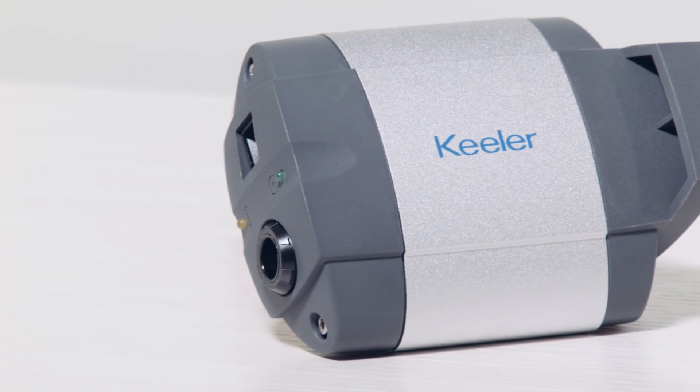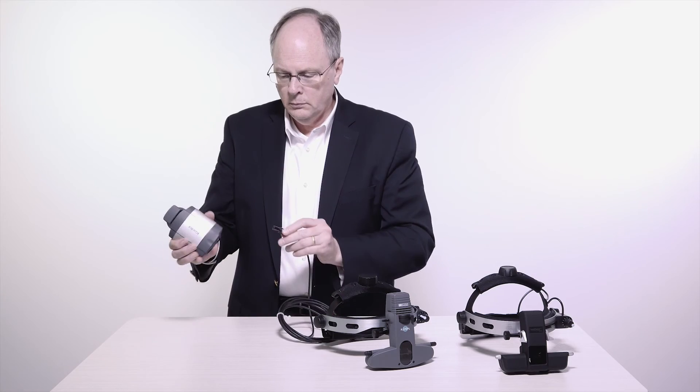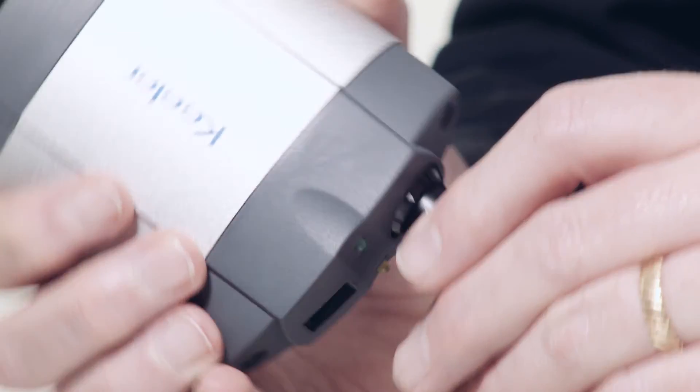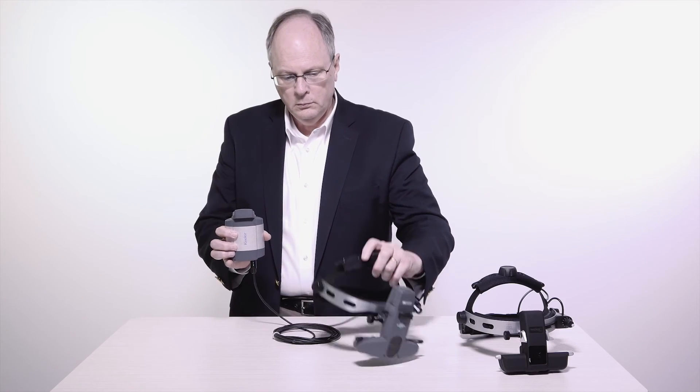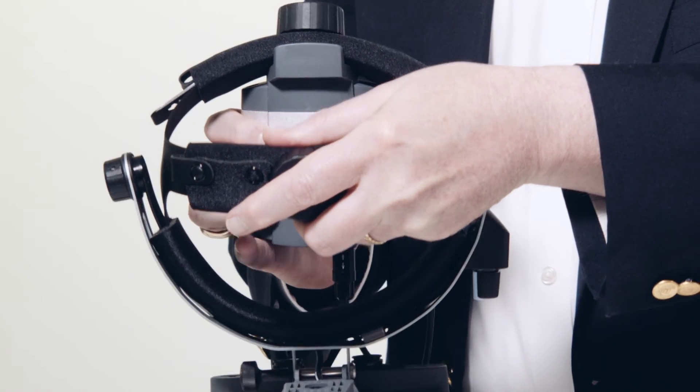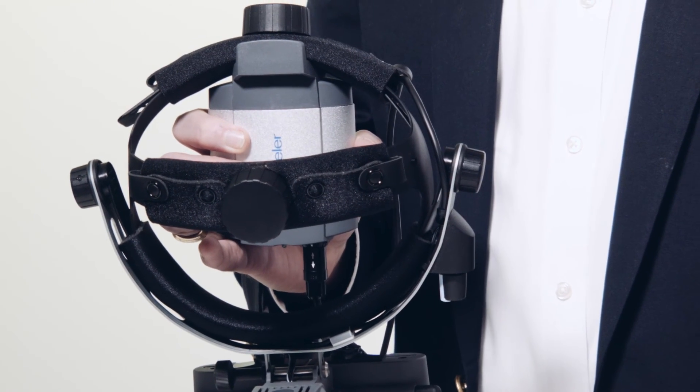All Pupil 2 or Vantage Plus wired units can be powered using the wall-mounted wall pack. This compact control and power system can neatly store and power your indirect. The built-in microswitch conveniently turns off the system when placed into its cradle.